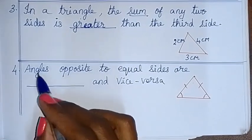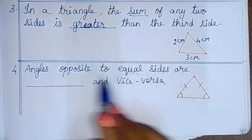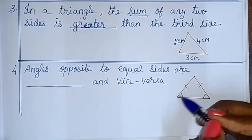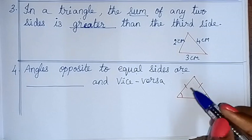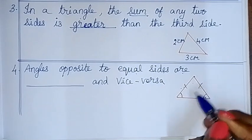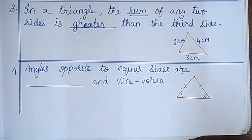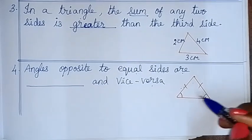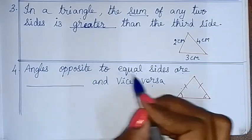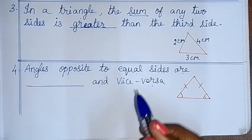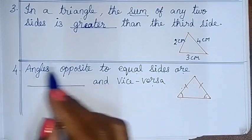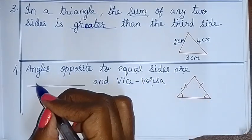Angles opposite to equal sides are equal, and vice versa. Equal sides have opposite angles that are equal. Equal angles and opposite sides are equal. Vice versa — angles opposite to equal sides are equal, and vice versa.